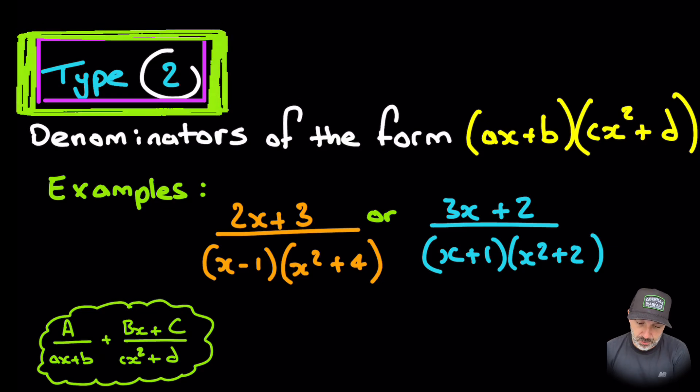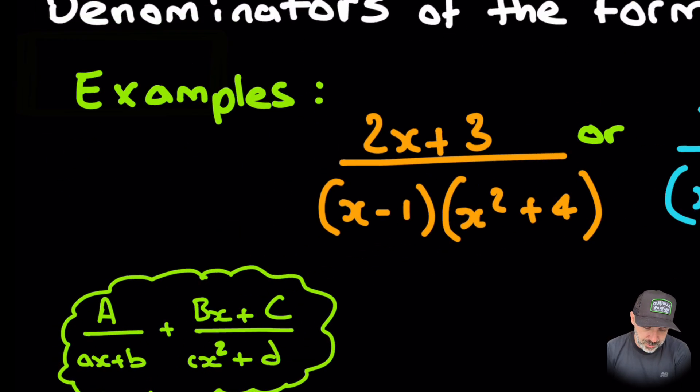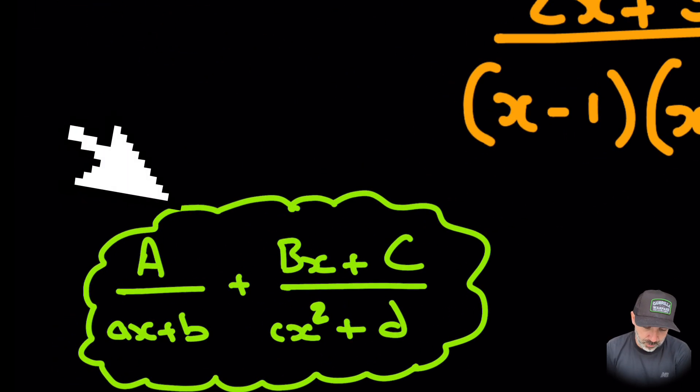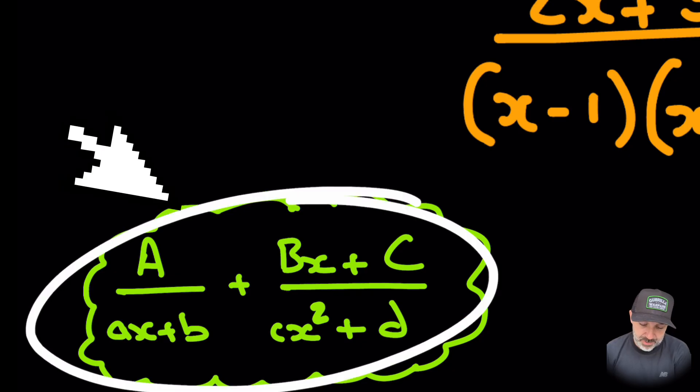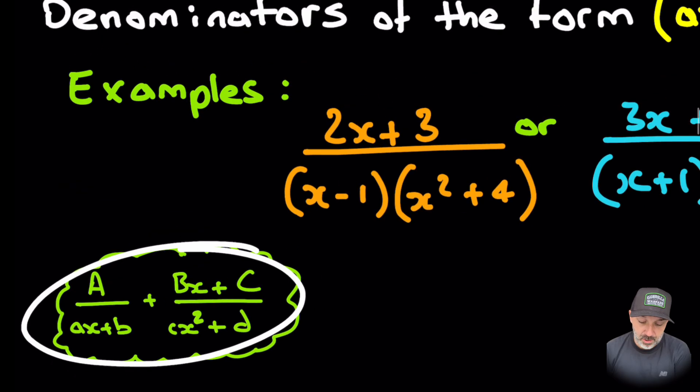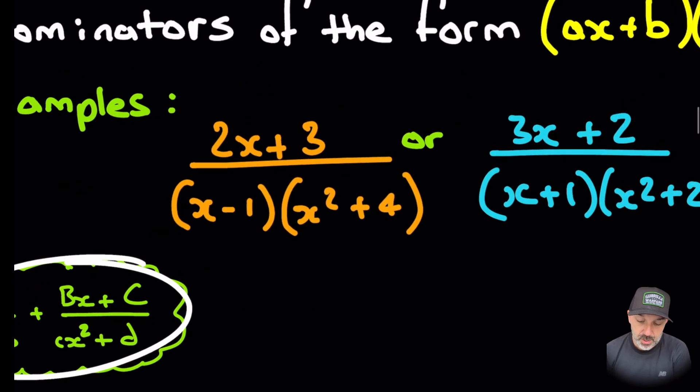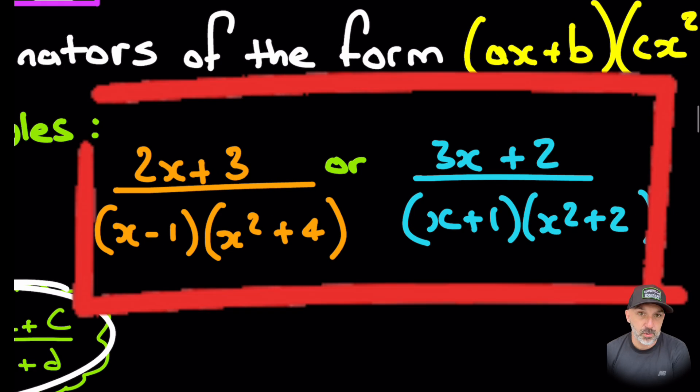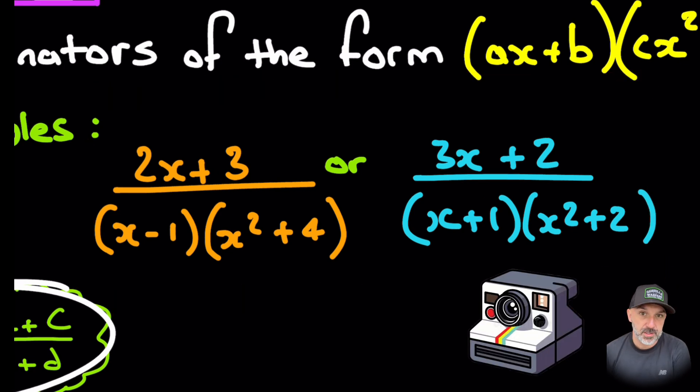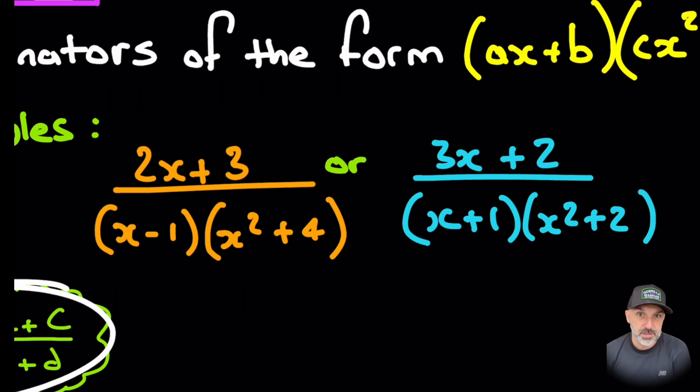So this one is type 2, slightly different. We're going to be using this approach here where we have A over ax plus b plus Bx plus C over cx squared plus d. In the next slide, I'm just going to go through why we are actually using that compared to the other one. These are the styles of questions that we're going to work through. If you want to have a go at them, you already know this approach. Pause the video, take a photo, and work through, and we'll see if you're correct.